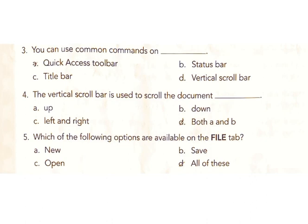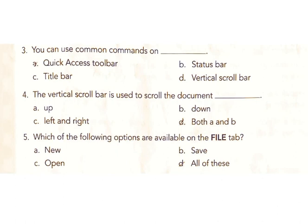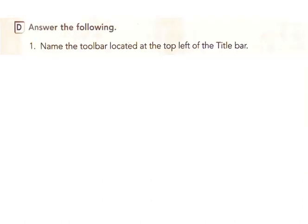Scroll the document A) up, B) down, C) left and right, D) both A and B. Answer: D, both A and B. Five: which of the following options are available on the file tab? A) new, B) save, C) open, D) all of these. Answer: D, all of these.